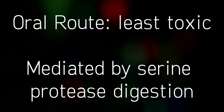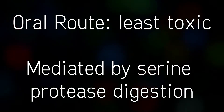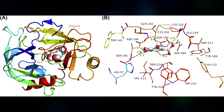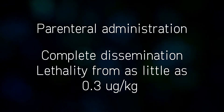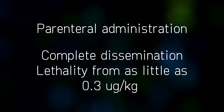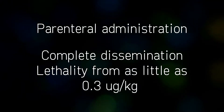Abrin behaves identically to that of ricin, and for more specific mechanistic details, refer to that video. Of the numerous routes Abrin can enter the body, the oral route appears to be the least toxic, as biochemical studies have demonstrated substantial digestion by trypsin, a serine protease, within the GI tract. Parenteral administration, however, allows for complete Abrin dissemination, and lethality can be observed from as little as 0.3 micrograms per kilogram of body weight. Elimination is performed primarily by the kidneys following parenteral administration.